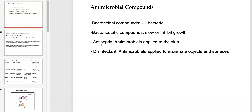An antiseptic is an antimicrobial compound that can be applied to skin or mucous membranes, so it's not quite as harsh as a disinfectant, which is applied to inanimate objects and surfaces. An antiseptic might be like Listerine that you can gargle with, or hydrogen peroxide that you can pour directly on a cut, whereas a disinfectant like bleach or ammonia you would mop a floor with or wipe down a countertop with, but you wouldn't gargle with.